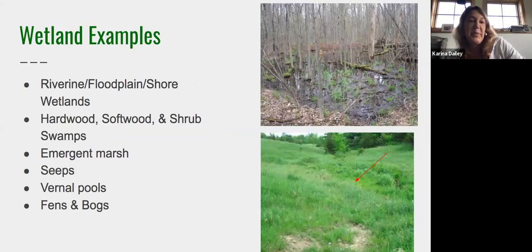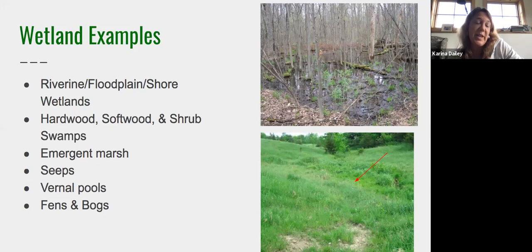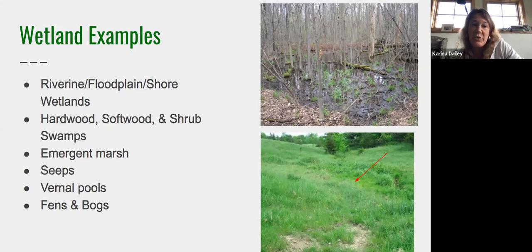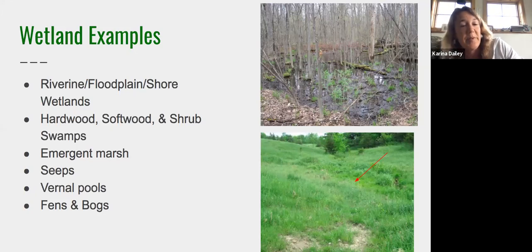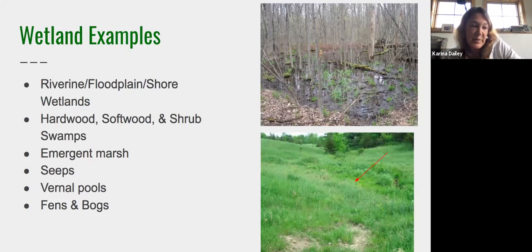There are many different wetlands in Vermont. It's important to recognize wetland fringes around streams — those riparian wetlands can be forested, they can be shrub wetlands, or big floodplain forest silver maple and ostrich fern swamps. There are also shoreline wetlands along lakes, alder swamps, large willow stands, softwood swamps, black spruce wetlands, and tamarack wetlands.